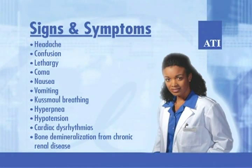The signs and symptoms of metabolic acidosis are nonspecific and affect the neurovascular, GI, respiratory, cardiovascular, and musculoskeletal systems. The most common physical findings are headache, confusion, lethargy, coma, nausea, vomiting, Kussmaul breathing, hyperpnea, hypotension, cardiac dysrhythmias, and bone demineralization from chronic renal disease. The diagnosis of metabolic acidosis is based on the evaluation of pH in combination with HCO3.